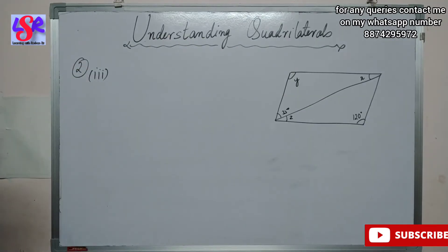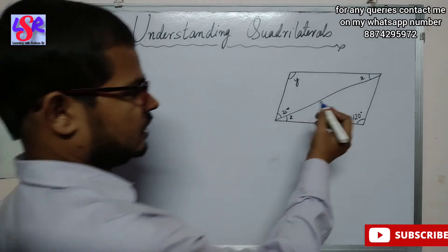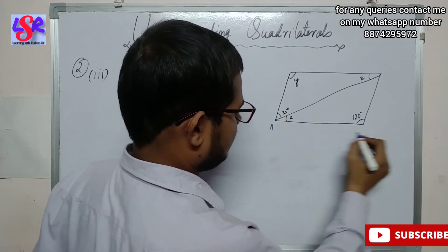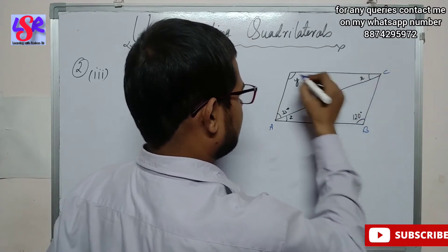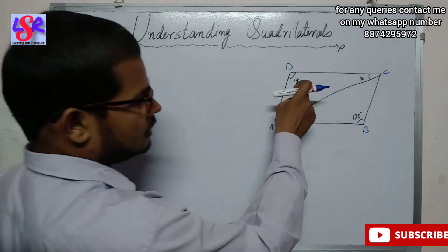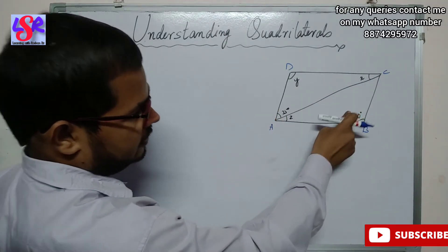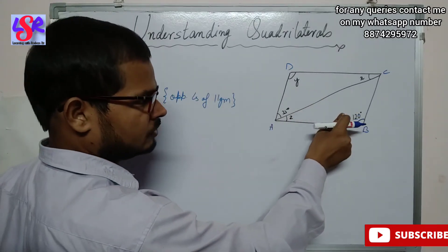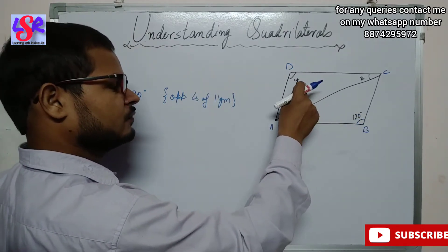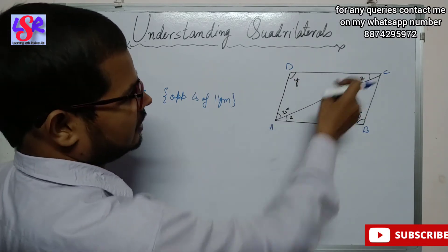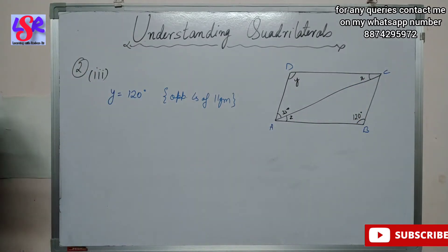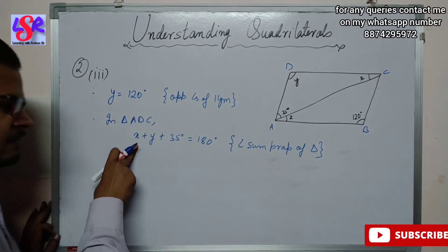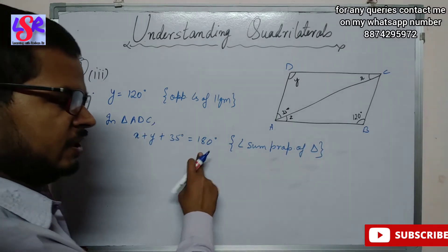Now we move to the third part of question 2. Here again we have a parallelogram in which we find X, Y, and Z. Let us name it A, B, C, D. Y equals 120 degrees as opposite angles of a parallelogram. Using Y in triangle ADC with angle sum property: X plus Y plus 35 equals 180 degrees.